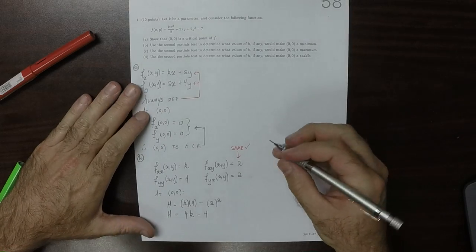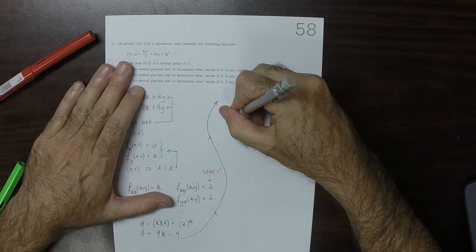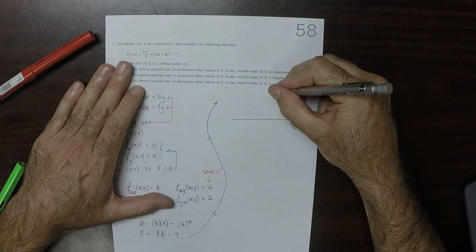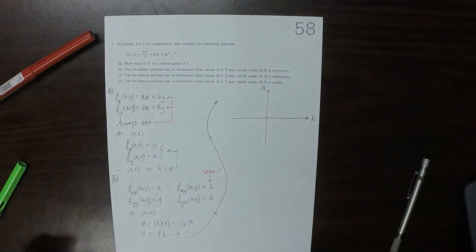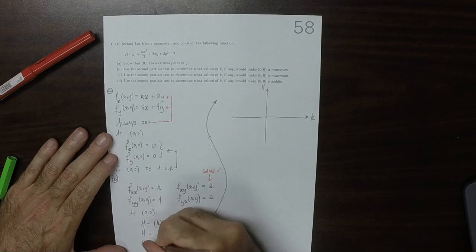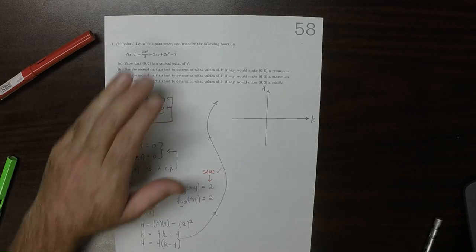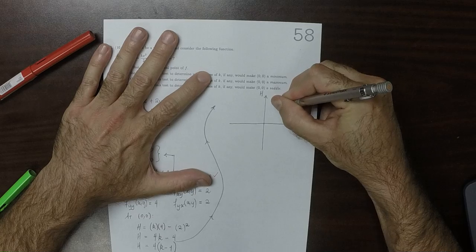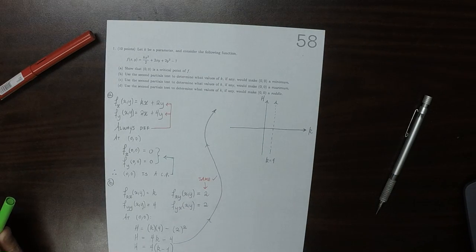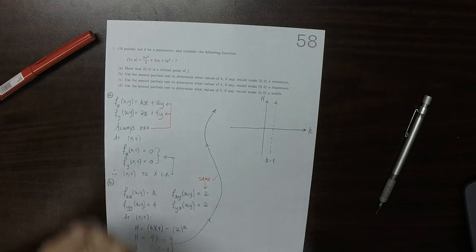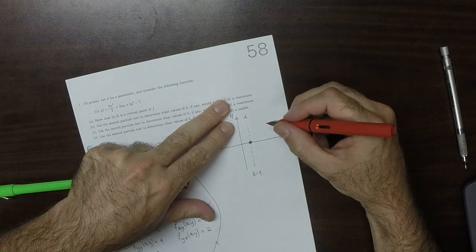Okay, so now let's plot that. So if we plot this, this is the k-axis, this is the h-axis. We could simplify this just a little bit, or just represent it in a slightly different way: 4 times k minus 1. So at k is 1, we have this intercept right here.